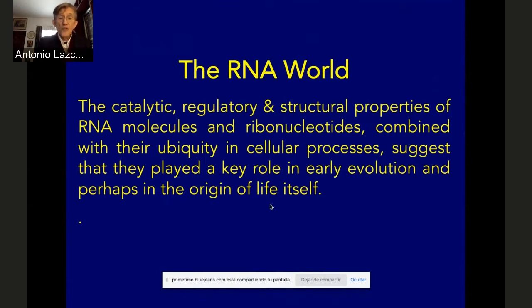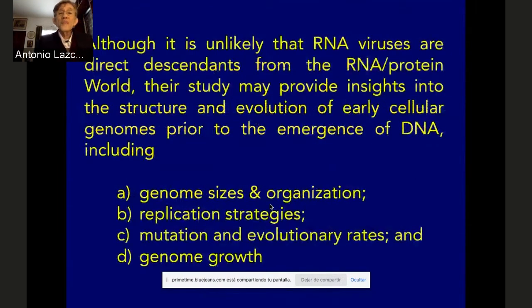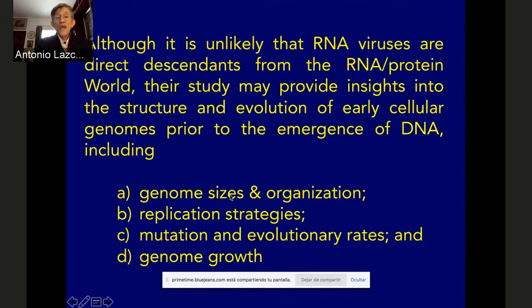There are many, actually contradictory, definitions of the RNA world coming from different groups. I could say that the catalytic, regulatory, and structural properties of RNA molecules and ribonucleotides, combined with their ubiquity in cellular processes, strongly suggest they play a key role in the early evolution and perhaps the origin of life. The basic assumptions underlying the work in my group in Mexico City are: first, that there were RNA cellular genomes in early cells prior to the emergence of DNA genomes; and second, that RNA viruses are imperfect but useful models of the primitive traits that RNA cellular genomes may have had. Although it is quite unlikely that RNA viruses are direct descendants from the RNA-protein world, their study can provide insights into genome sizes and organization, replication strategies, mutation and evolutionary rates, and the ways genomes grow and enhance their encoding properties.